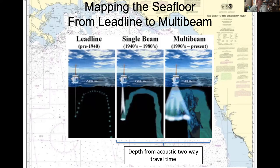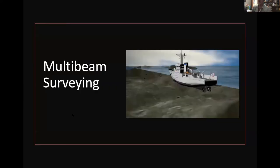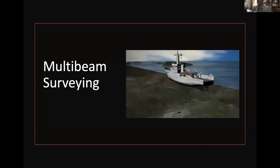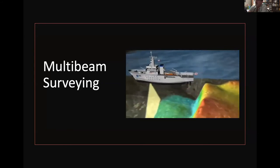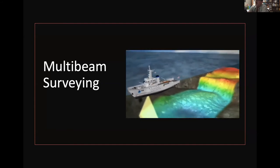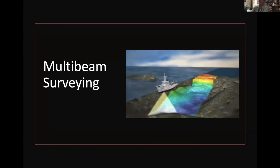A diagram shows the evolution from lead line to multi-beam: lead lines were used pre-1940, single-beam echo sounders from the 1940s through the 1980s measuring depth directly below the vessel, and multi-beam systems starting in the 1990s providing a swath of seafloor measurements. A NOAA movie of multi-beam surveying shows the ship mapping the seafloor to either side as it travels. Both single and multi-beam systems rely on acoustic two-way travel time, making the speed of sound critical to monitor.